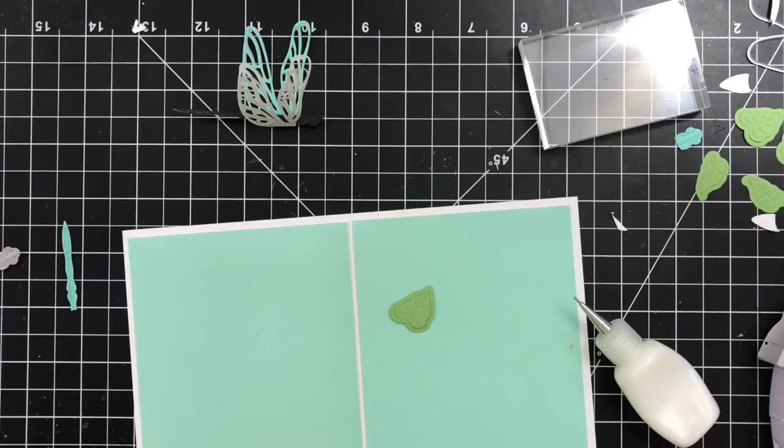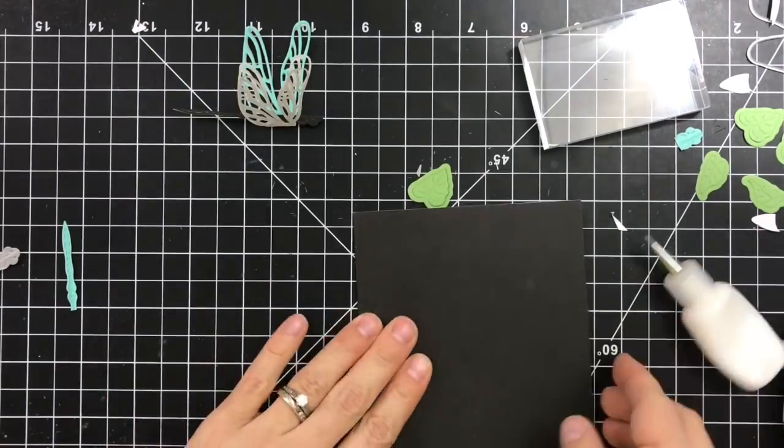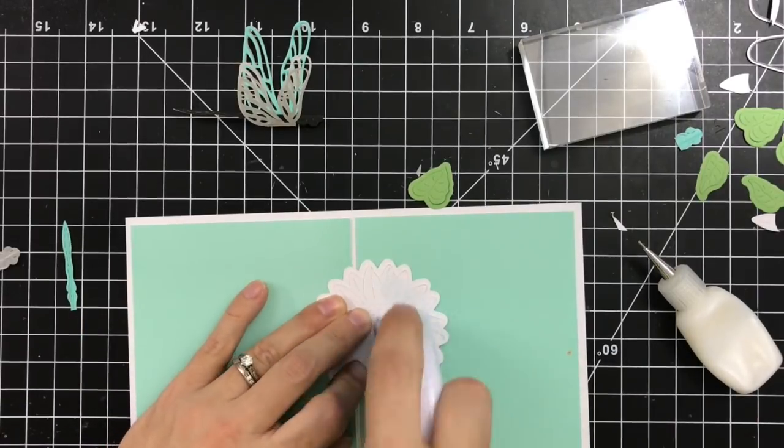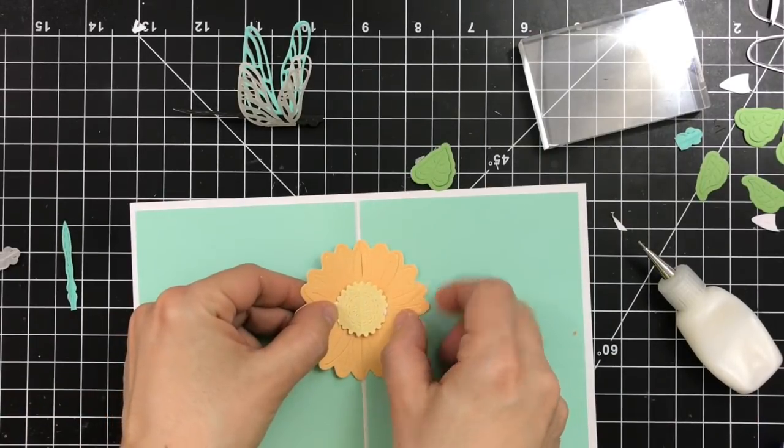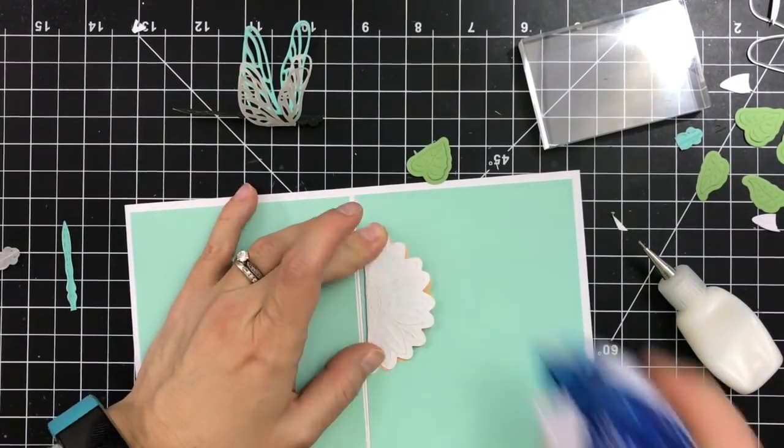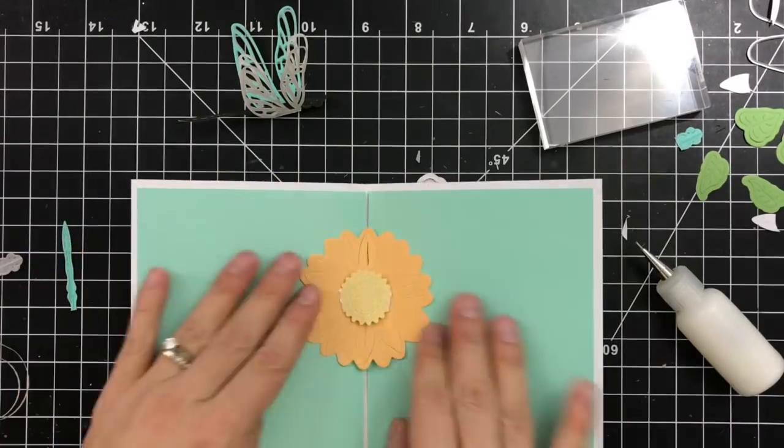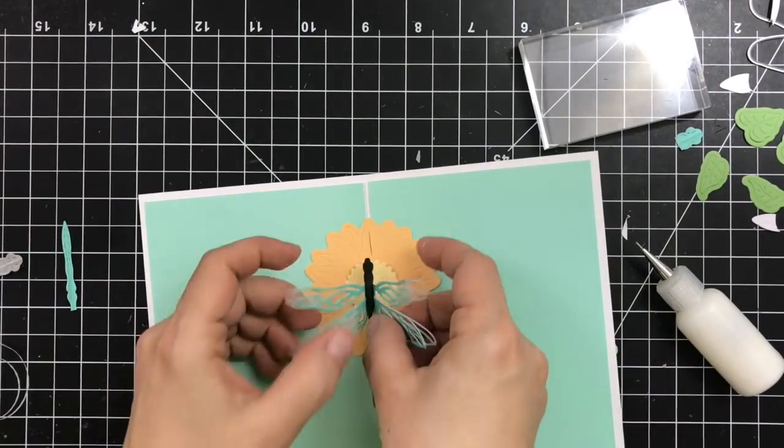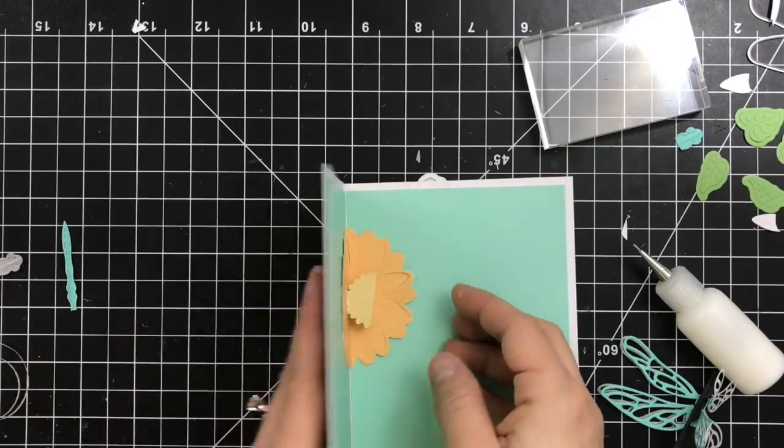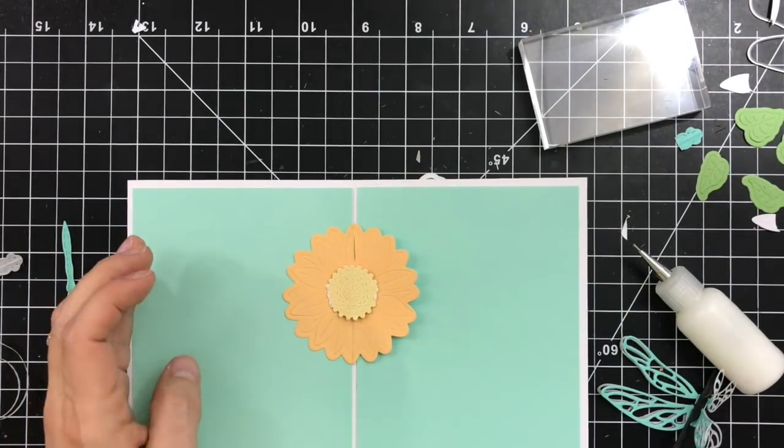Now we can work on adhering that flower in the middle. You can notice how that center pops up. So I just adhered one side, then I place adhesive on the other side and close the card. You see how that middle pops up when you try to close the card.